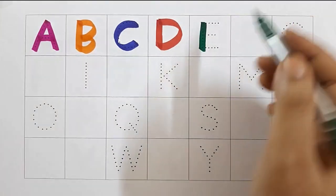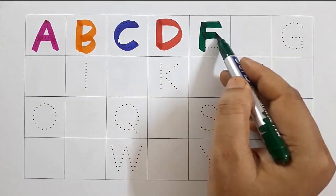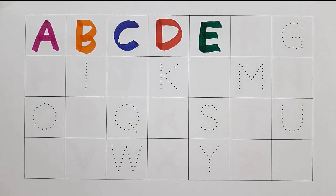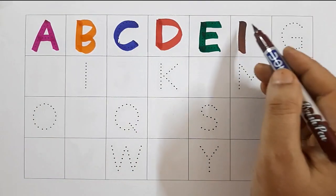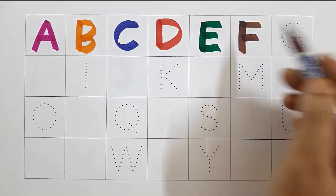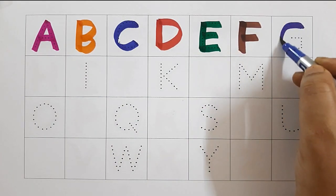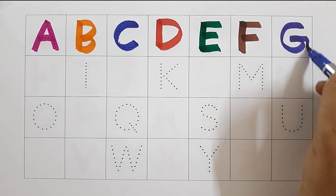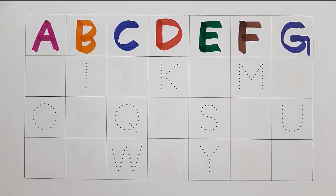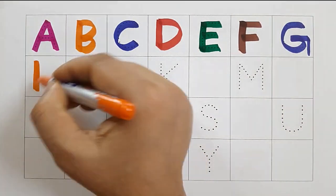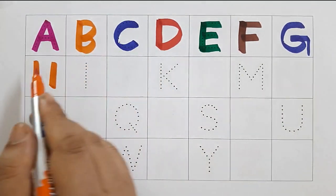E, E for eye. F, F for fan. G, G for goat. H, H, H for hen.